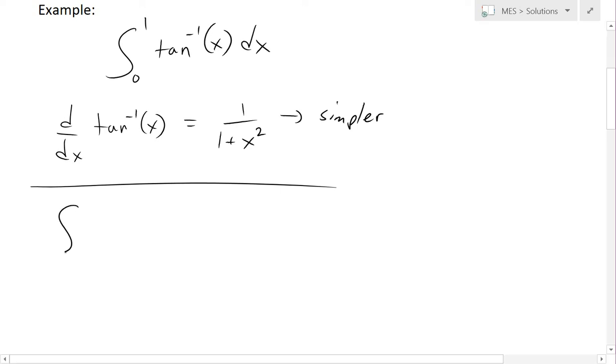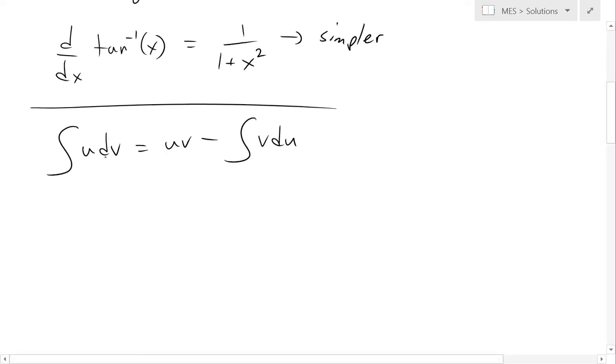Now I'm just going to write the formula again. So u dv, we're writing the simplified version, u dv equals uv minus v du. I haven't put in the from A to B, from 0 to 1 in this case, because we're dealing with just a different variable, but I'll plug that in at the end.